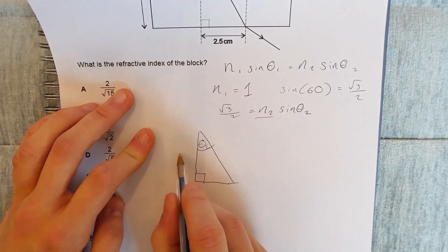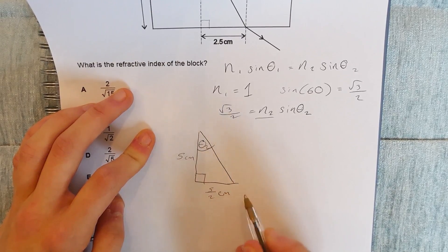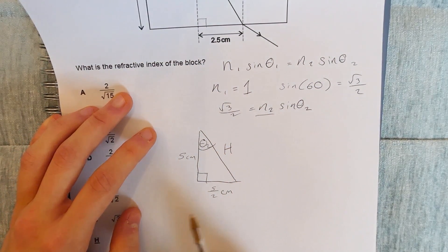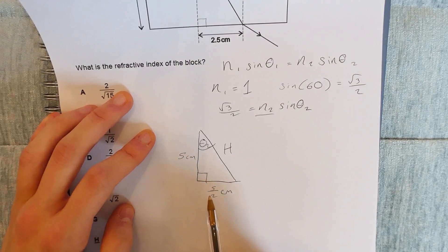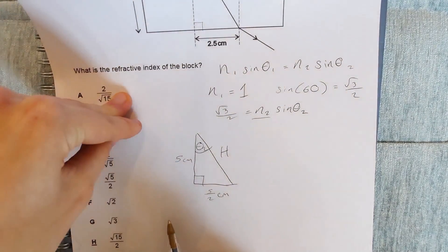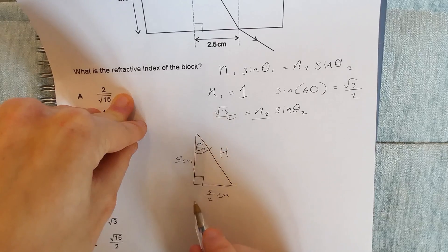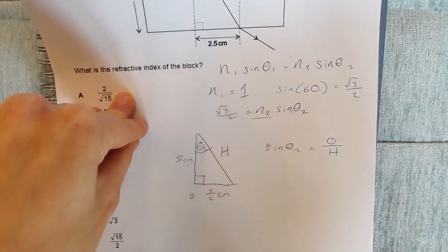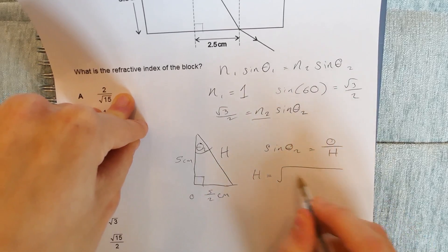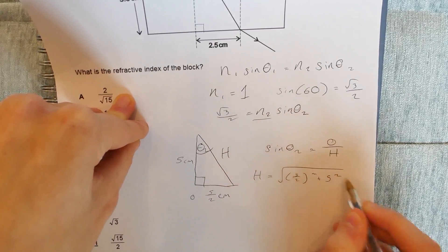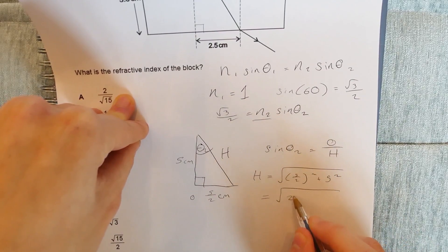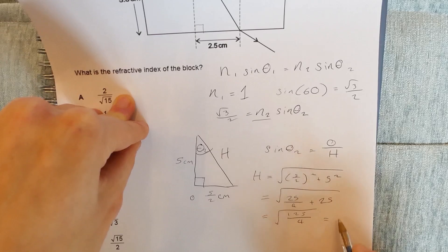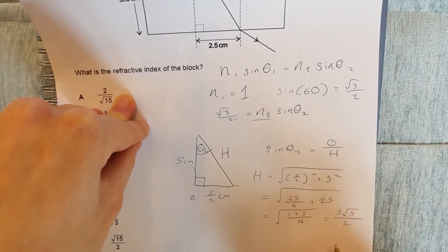So we're told that the block is a rectangle, so this angle here is a right angle. Now this means we can redraw this as a new triangle here. So this is theta 2, which we want to calculate, and we've got the length here of 5 centimeters, length here of 2.5 centimeters, or 5 over 2, and an unknown hypotenuse. Now there's a couple of ways we could go about finding theta 2. One potential way would be trying to find tan theta 2 and working from there. However, tan theta 2 would be equal to 1 half, and this isn't a standard value, so we're going to have to try something else. Sine theta 2 is equal to the opposite over the hypotenuse. So if we calculate what the hypotenuse is, then we're sorted. So H is therefore equal to the square root of 5 over 2 all squared plus 5 squared, equal to 25 over 4 plus 25, equal to the square root of 125 over 4, is equal to 5 root 5 over 2.